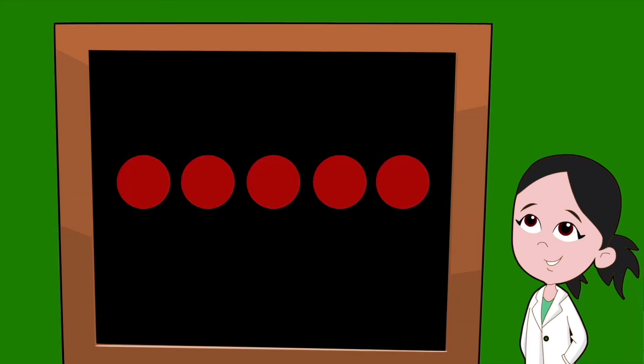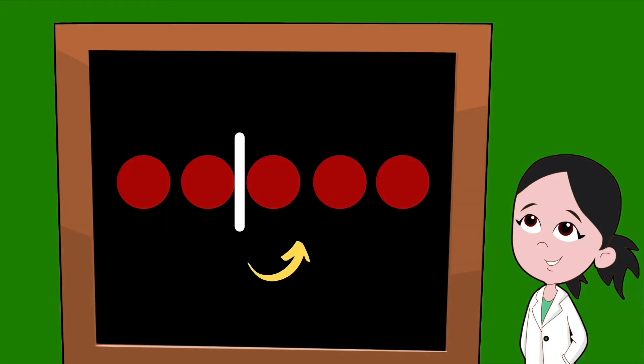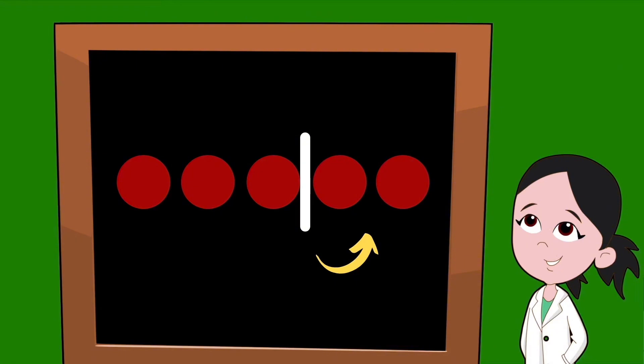Let's use dots to represent our numbers. To find partners, we simply split up the dots. We're going to use a line. So here, we would have one dot on the left and four dots on the right. That pair of numbers is partners: one and four. To make sure we don't miss a number, we simply move our line over one dot at a time to make sure we find all the partners.